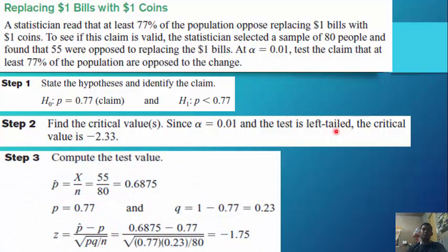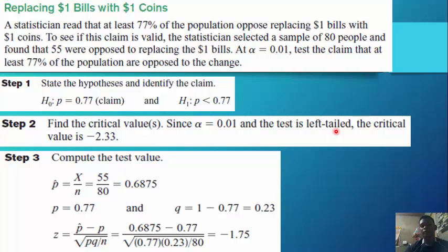Step 3: Compute the test value. p-hat equals x over n; substituting, 55 divided by 80 equals 0.6875. p equals 0.77 and q equals 1 minus 0.77 equals 0.23. Substituting into the formula z equals p-hat minus p over the square root of pq over n, we obtain negative 1.75.